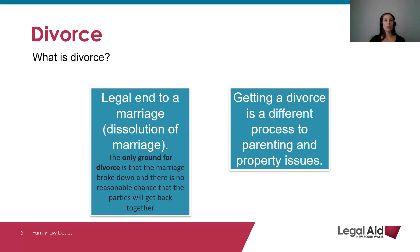We are going to begin by talking about divorce. When two people get a divorce, it essentially means they are no longer married and their marriage has been dissolved by court. You don't have to wait to get a divorce to do a property settlement, which I'll talk about later. Property issues and children's matters are separate to getting a divorce.